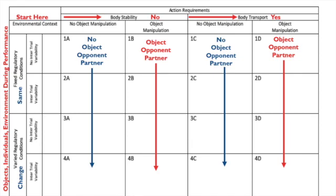Just below the regulatory conditions, we've got two terms under both fixed and varied: intertrial variability or no intertrial variability. We have to ask ourselves: does the attempt that comes after our first attempt remain relatively the same, or does it differ? Make sure you've got these terms written down on your chart, because this will help us know how to utilize it appropriately. Feel free to pause the video here to make sure you've got everything listed correctly.